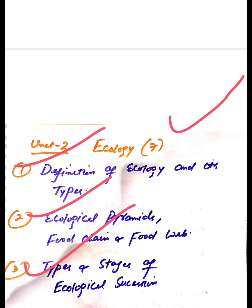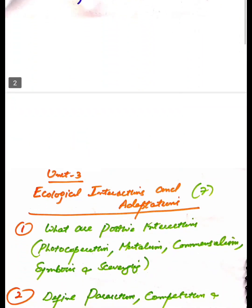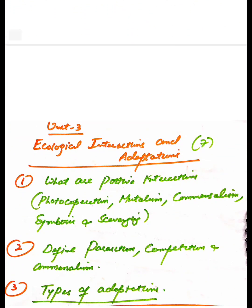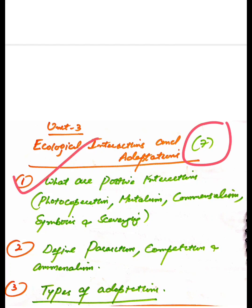Coming to Unit 3, that is Ecological Interaction and Adaptation. This will also be 7 marks. First question is what are positive interactions, which includes cooperation, mutualism, commensalism, symbiosis, and scavenging.